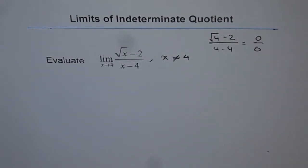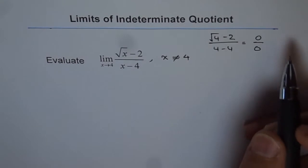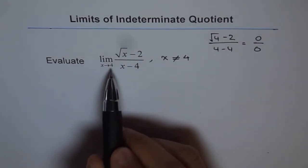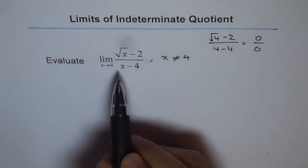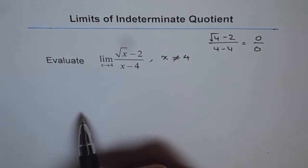However, the limit may exist, right? There could be a hole at x equals to 4 and while approaching from either side, we may approach a value. So, that is the whole idea. Now, how to solve it? One thing is very clear that we do have a factor x minus 4 in numerator as well as in denominator.